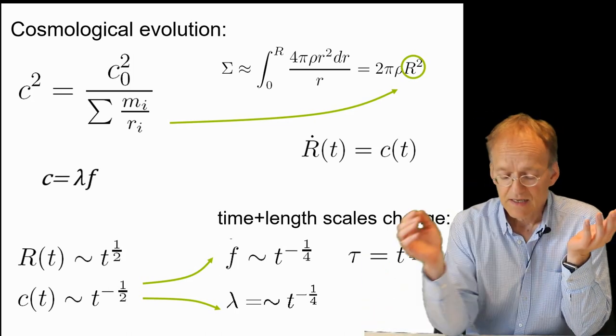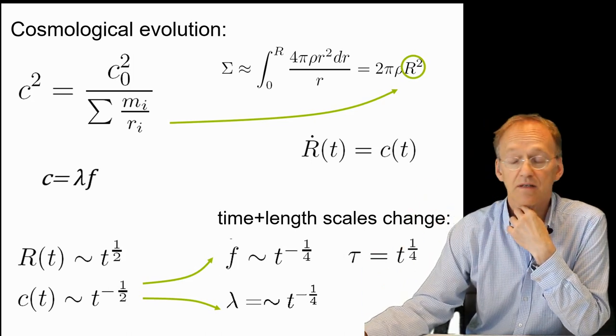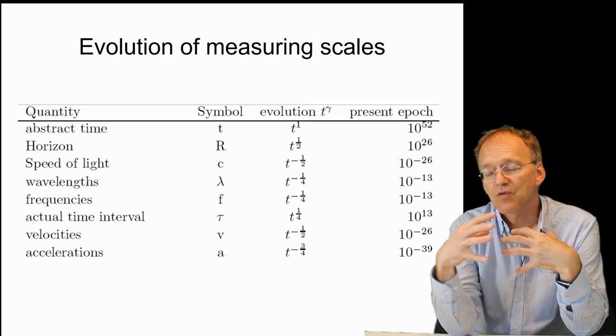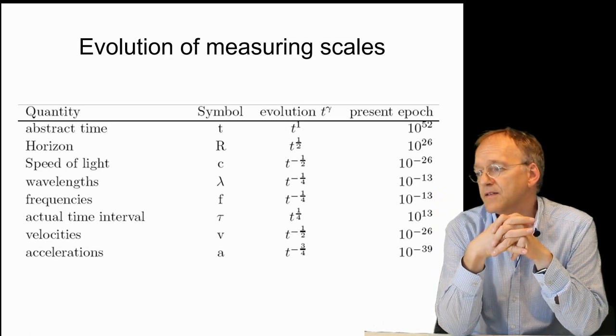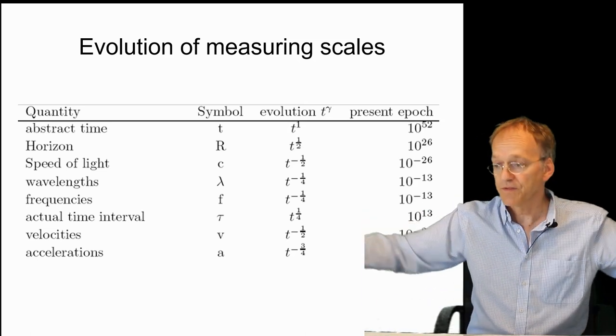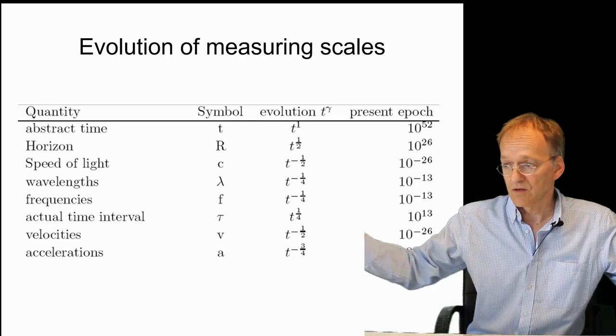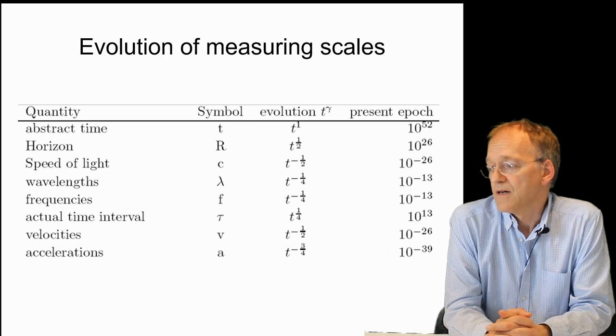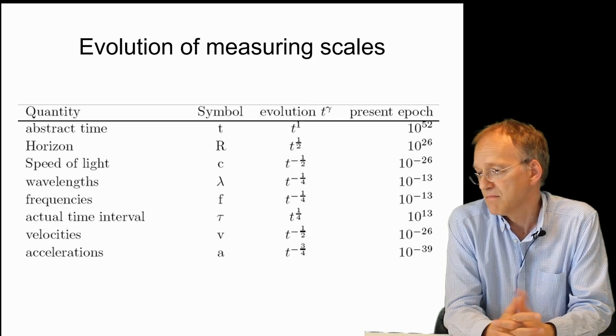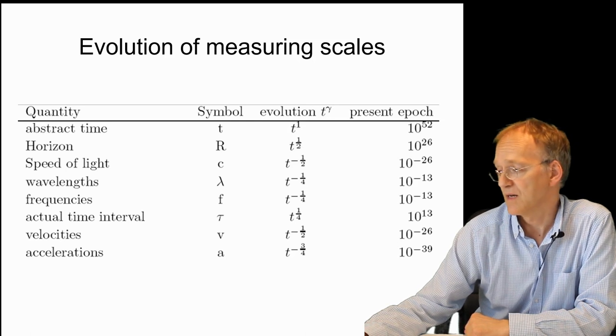And necessarily, you arrive at the conclusion that you have these contracting length scales. We live, so to speak, in an entire world of variable scales. You might define an abstract time. You see that the horizon, that's what we see of the universe, obviously still increases, but the speed of light, which is the rate of this horizon increase, becomes slower. And correspondingly, anything else is variable. As I said, the details are in the Hubble video.